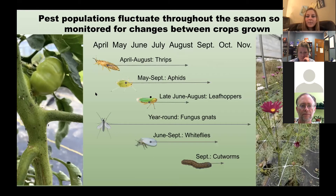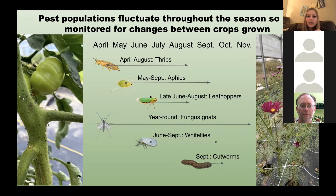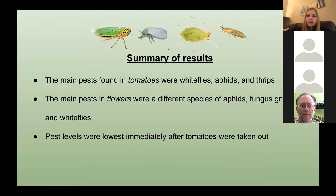Here's just an overview of how the pest populations fluctuated throughout the seasons. There are tomatoes and then flowers, and different pests were present for different variations of time. The main pests I'll be going into detail on are these ones here. Pest levels were the lowest in all the tunnels immediately after the tomatoes were taken out and right before the flowers were put in.